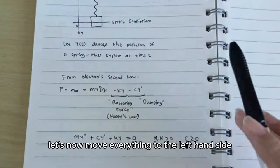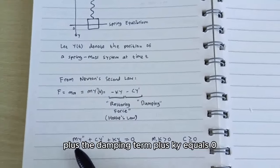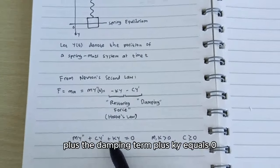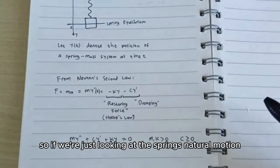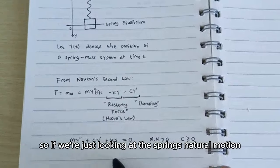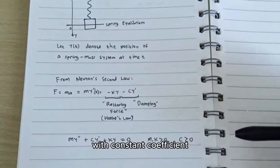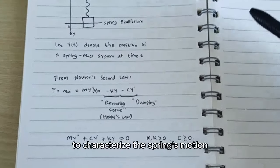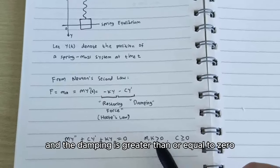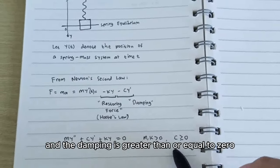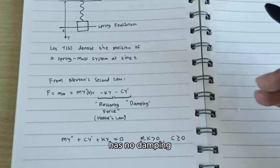Let's now move everything to the left-hand side. We have the mass times the acceleration plus the damping term plus ky equals zero in the absence of external forcing. So if we're just looking at the spring's natural motion, this would be the second order linear differential equation with constant coefficient to characterize the spring's motion. Here m and k are positive, and then damping is greater than or equal to zero, because it's possible that the spring experiences no damping.